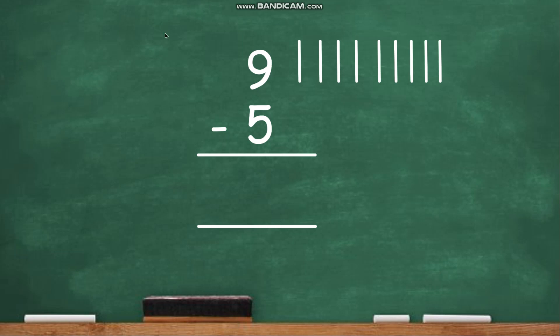Now you will see the second number after minus. It is 5. What I will do is, in addition we used to draw 5 lines. Here, since it is subtraction, here is minus sign, so we are going to cut 5 lines. Let me show you. 1, 2, 3, 4, 5. Minus means cut. So I have cut 5 lines.